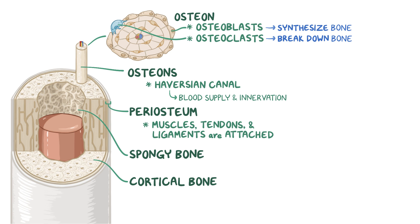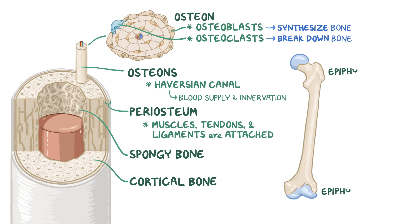In bones like the long femur, the tips are called the epiphysis, while the shaft is called the diaphysis. Between them we have the metaphysis, which contains the growth plate, the part of the bone that grows during childhood.